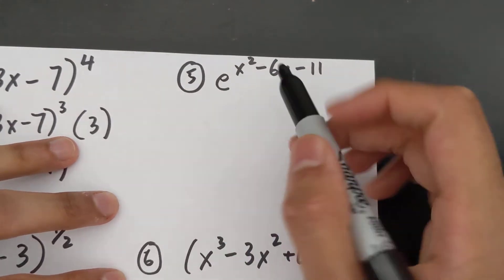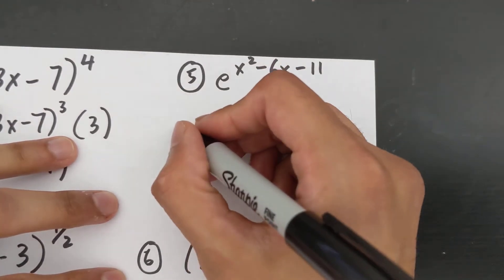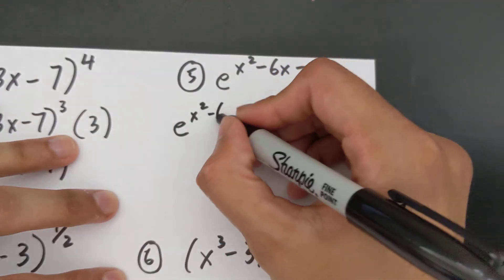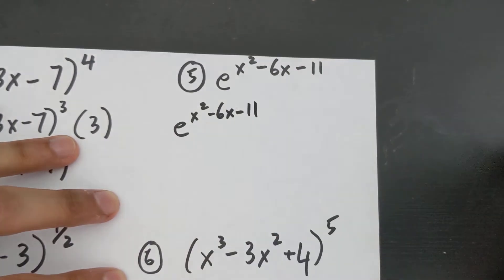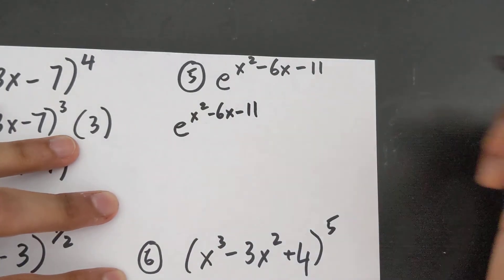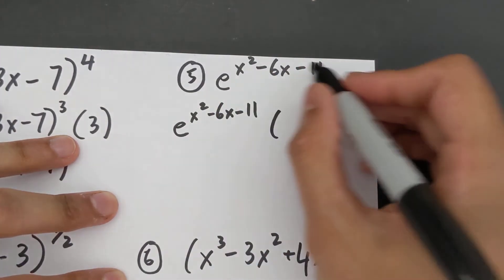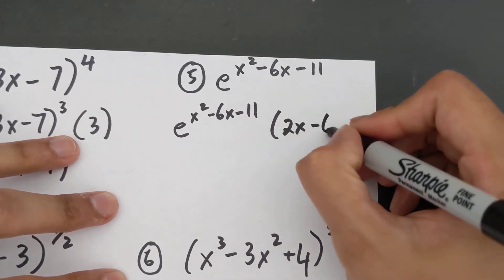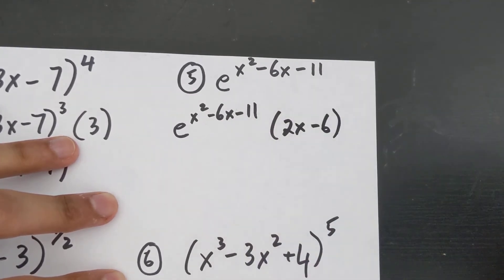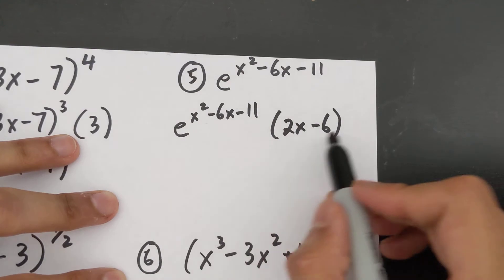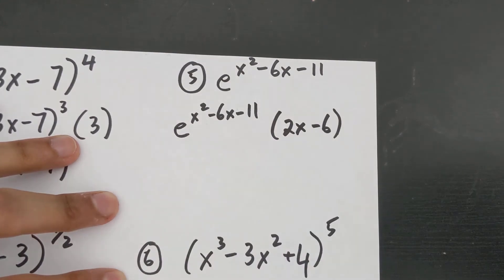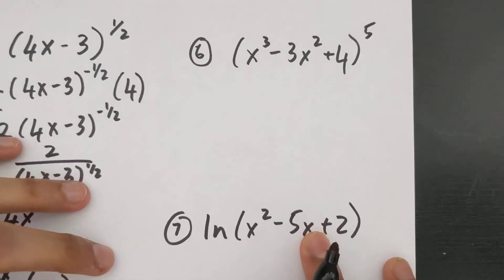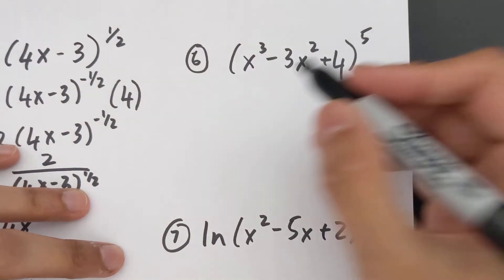Number five is an e function: when you differentiate an e function you write the exact same thing and then multiply by the derivative of the exponent, which is 2x − 6. You can leave it like that or move it to the front — that's the final solution.